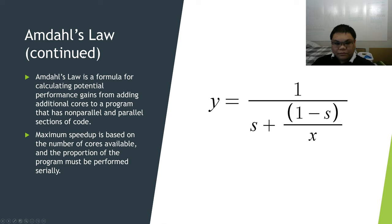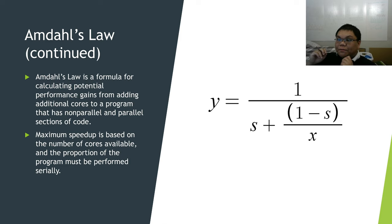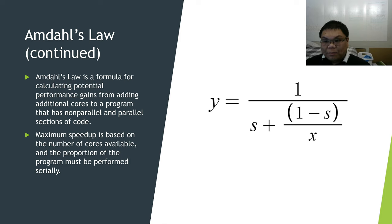Finally, we get to Amdahl's Law. This is a formula for calculating the potential performance gains from adding additional cores to a program that has non-parallel and parallel sections of code. In the formula, Y is our maximum speedup, S is the proportion of code that cannot be made parallel, therefore 1 minus S is the proportion that can be made parallel, and X is the number of cores we have.